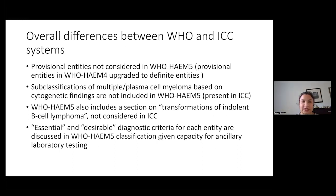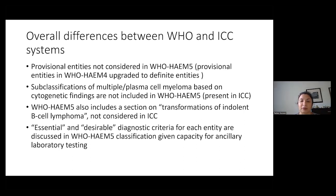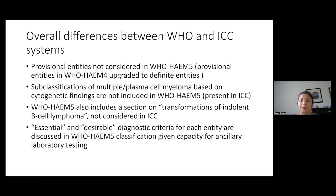The overall differences between the two classification systems: provisional entities were not considered in the fifth edition of the WHO, so most of the provisional entities in the fourth edition have been upgraded to definite entities, whereas in the ICC, a lot of them have been left provisional. In the ICC, the subclassifications for plasma cell myeloma — or multiple myeloma — are based on cytogenetic findings not included in the current WHO. The fifth edition of the WHO also includes a section on transformations of indolent B-cell lymphoma, which is not considered in the ICC.